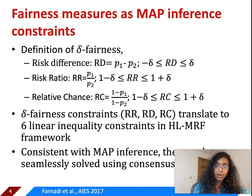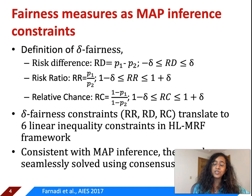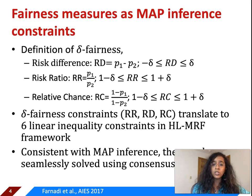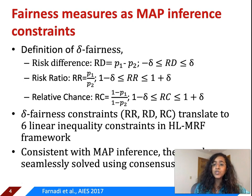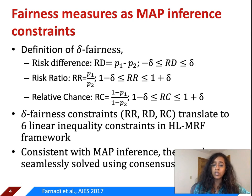Delta fairness constraints of risk ratio, risk difference, and relative chance translate into six linear inequality constraints in HLMRFs. We constrain the values to go between minus delta and plus delta for the first one, between (1 minus delta) and (1 plus delta) for the second and third. Since HLMRFs inherently use linear inequality constraints, these can be easily integrated with existing constraints and seamlessly solved using consensus optimization, which already exists for HLMRFs.